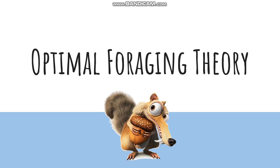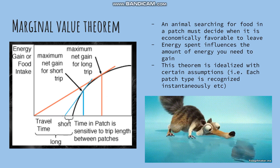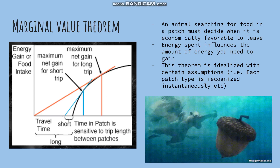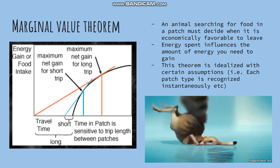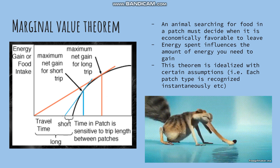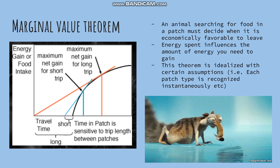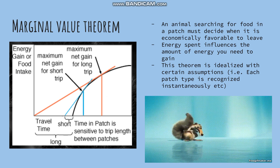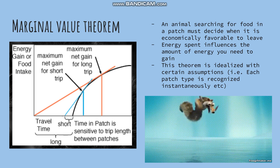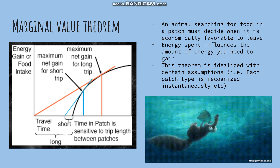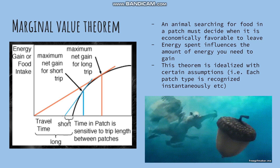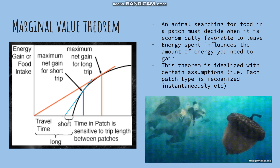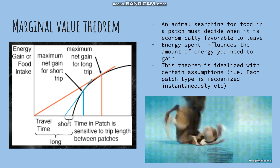Optimal foraging theory states that no predator eats everything that is available. Food item selection is an evolutionary construct driven by economy, not etiquette. Therefore, an animal searching for food in a patch must decide when it is economically favorable to leave.